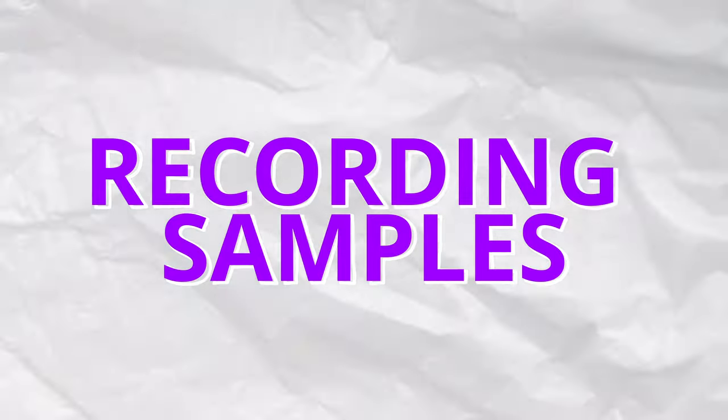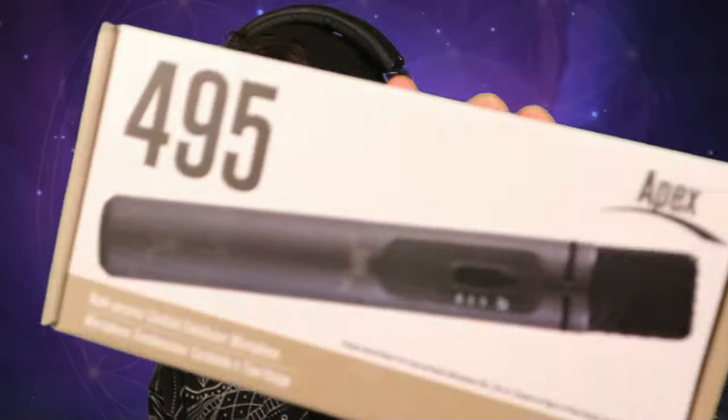Number two: let's talk about recording external samples. Let's go a little bit deeper into Push 3's sampling features. Instead of recording audio from external instruments such as the OP1, an external synth, or external drum machine, you can just record external sound in general. Enter the microphone — we're going to check out this Apex 495, which is a battery-powered condenser microphone, so that we can sample stuff into Push 3.